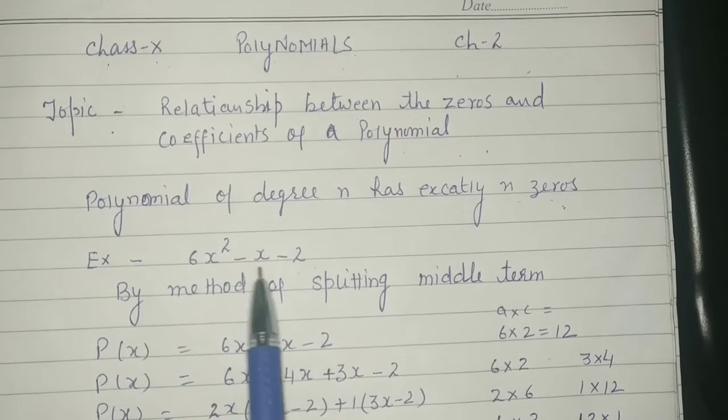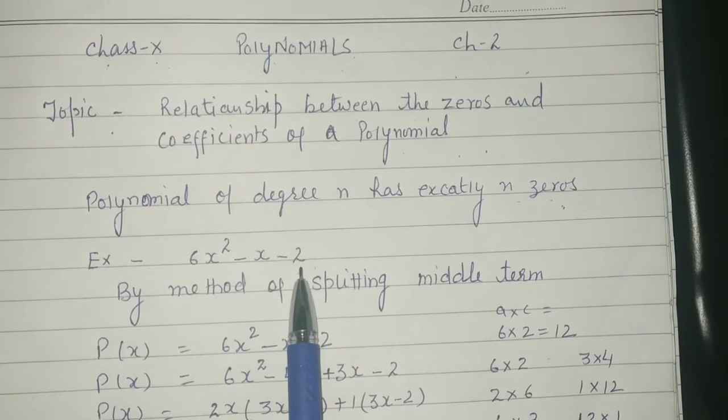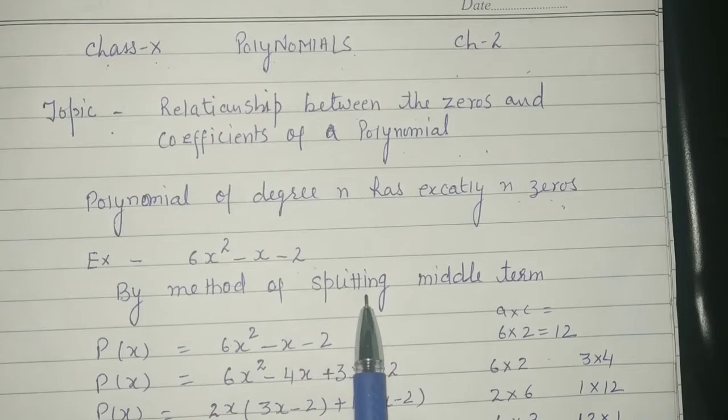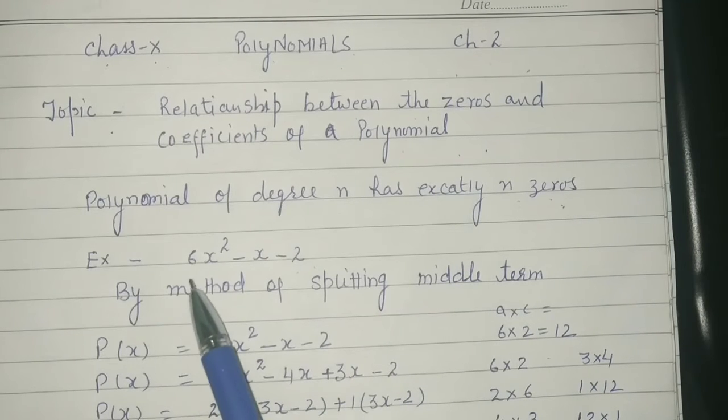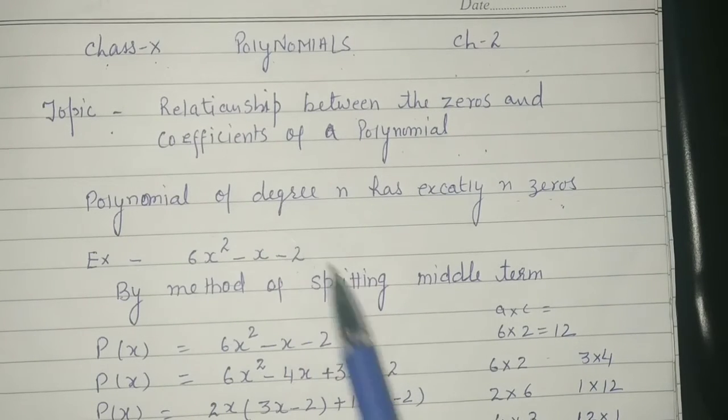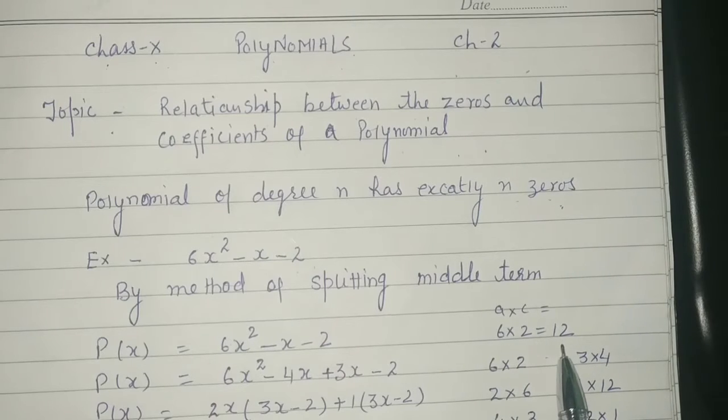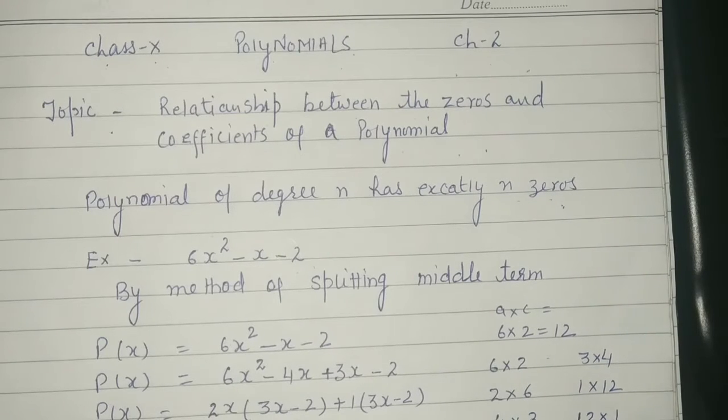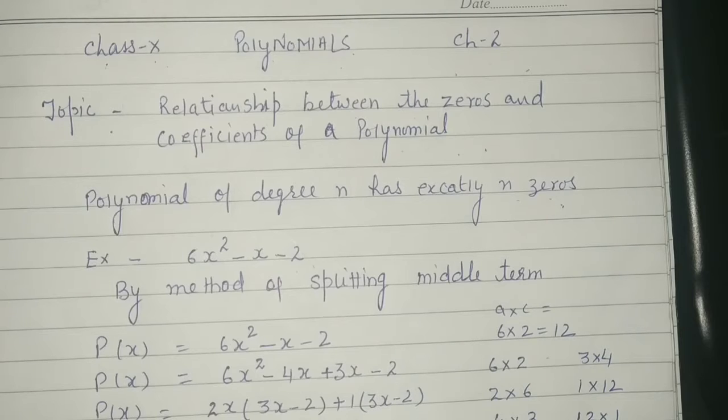We are going to find zeros of this quadratic polynomial by method of splitting middle term. First we need to multiply a and c. If we multiply 6 into 2, we get 12. First we need to find factors of 12. These are the factors of 12.